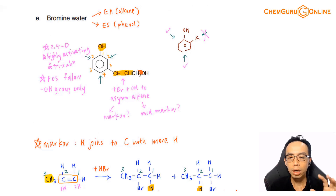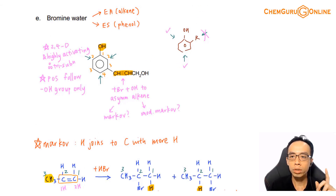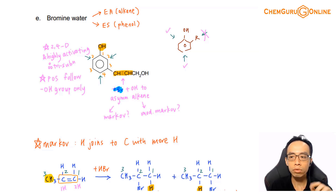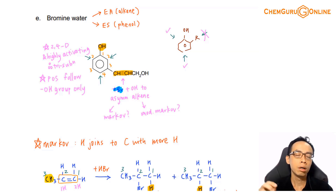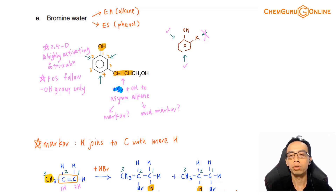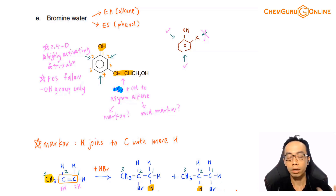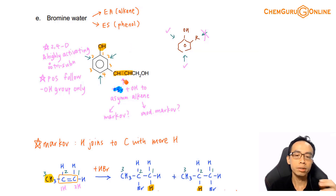Coming back to the reaction involving adding bromine and an OH group — bromine is the electrophile, this is the E+. So what we do is consider bromine joining to the carbon with more hydrogen; this gives the major product. Now let us try to apply this here, but of course there's a problem.